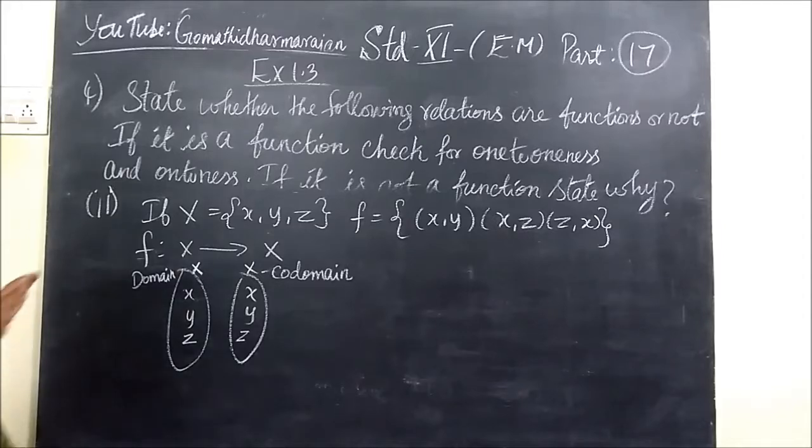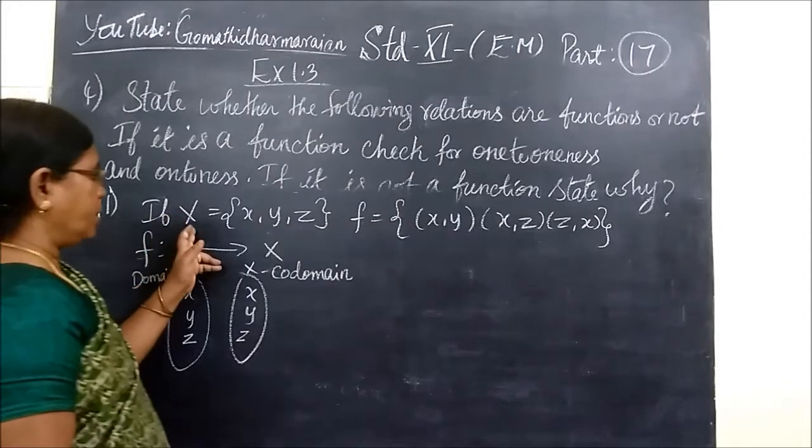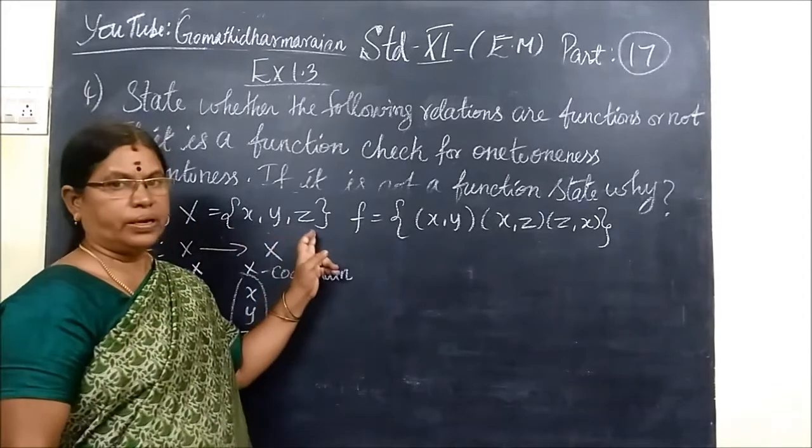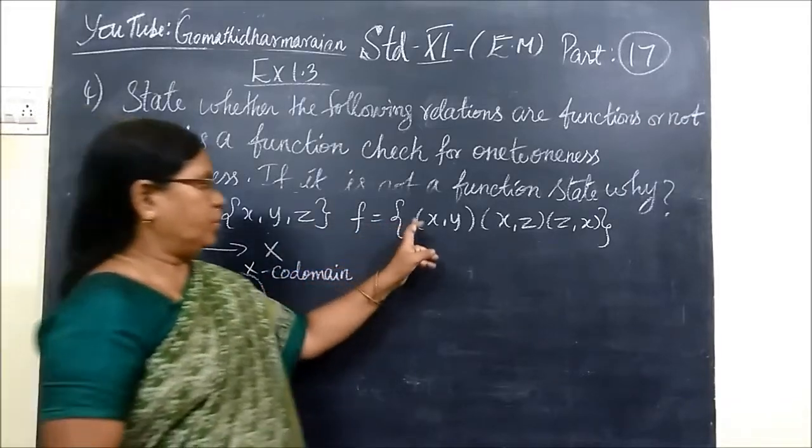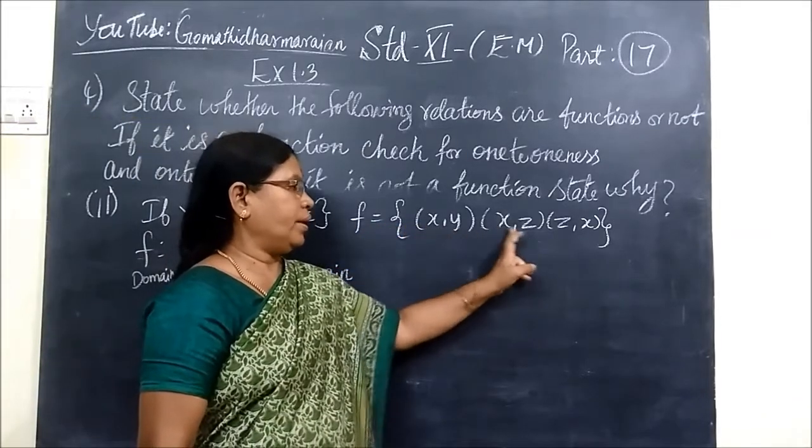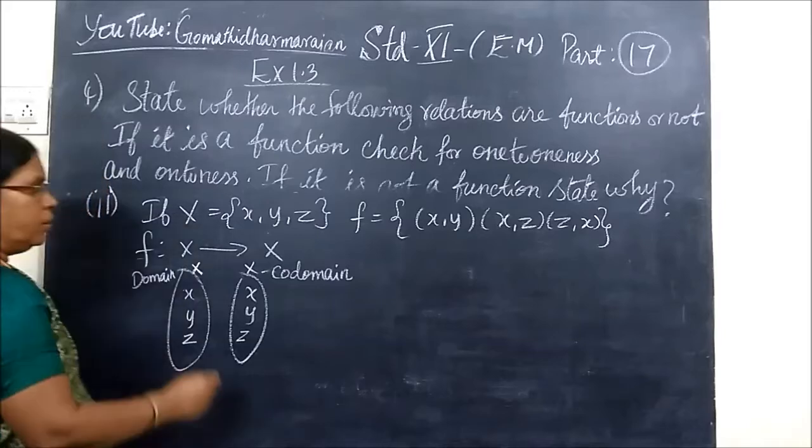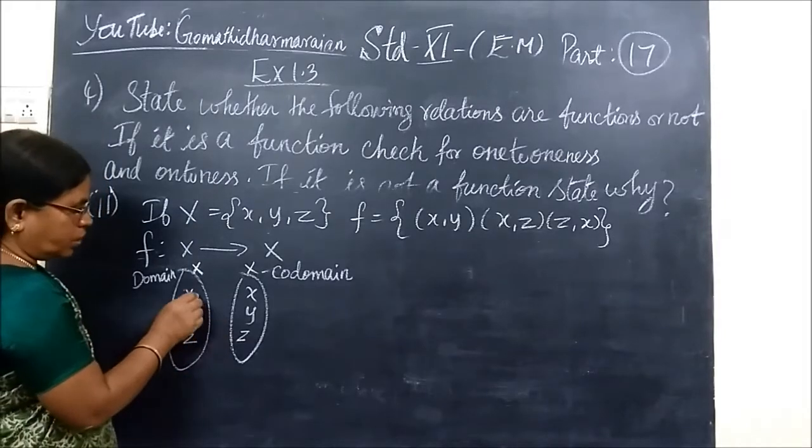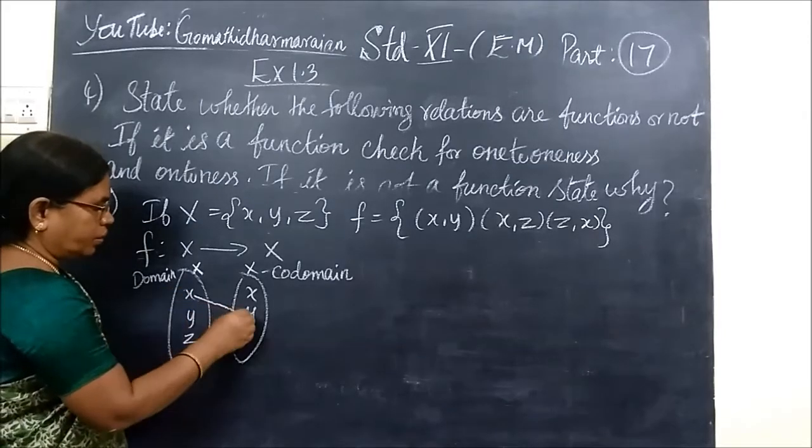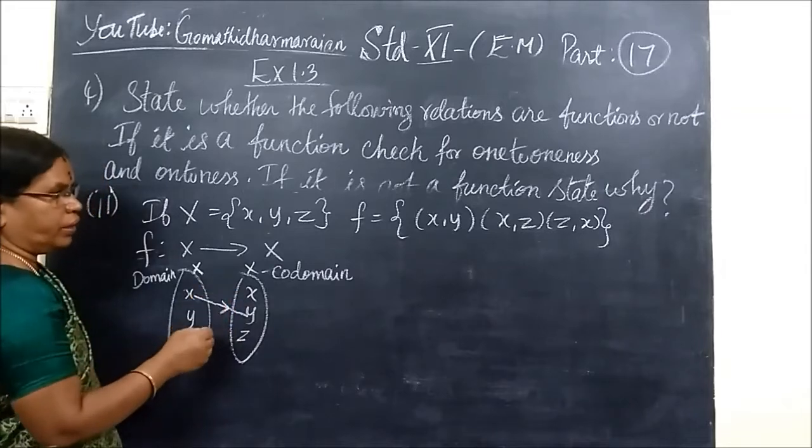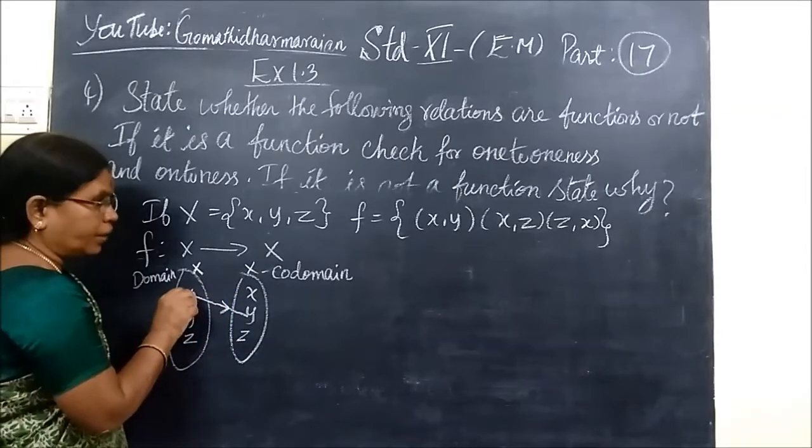So now we see the second problem. Here the set S is X, Y, Z. And the mappings are X to Y, X to Z, Z to X. Now X is associated to Y, so image of X is Y. Then image of X is also Z.